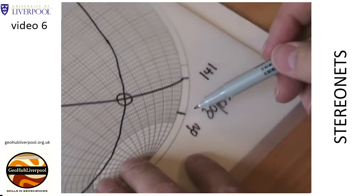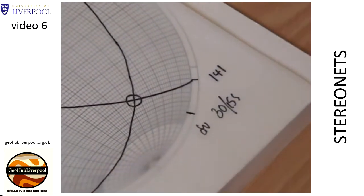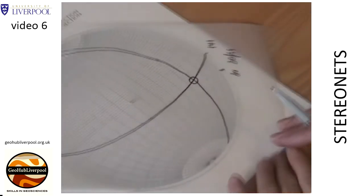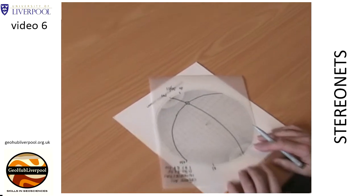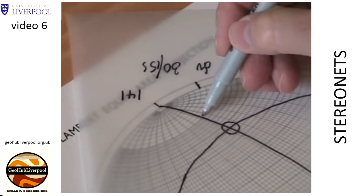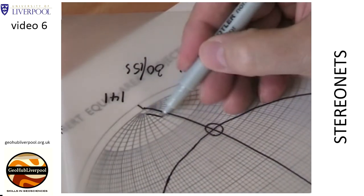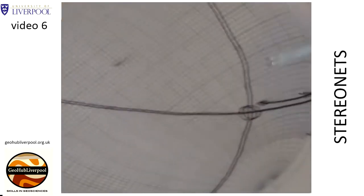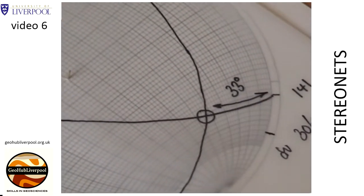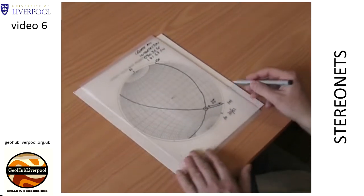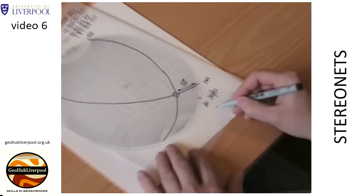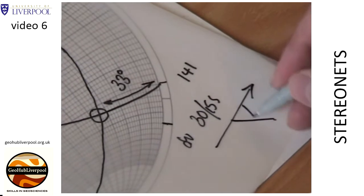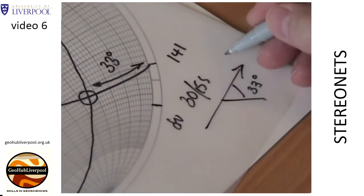You can also work out the pitch or rake of this lineation in the plane 141/68 southwest. To do this, rotate the tracing paper so that the great circle you've drawn lies on the great circle on the stereonet. From the north pole on the primitive circle, count the small circles to the point that records the lineation. This gives you a measurement of 33 degrees. Rotate the tracing paper so the north pole is on the north pole on the stereonet and write the pitch of the intersection on the tracing paper. The pitch is at 33 degrees to the southeast.